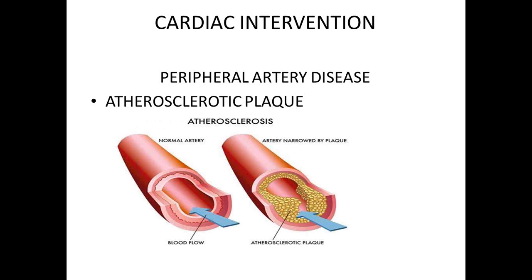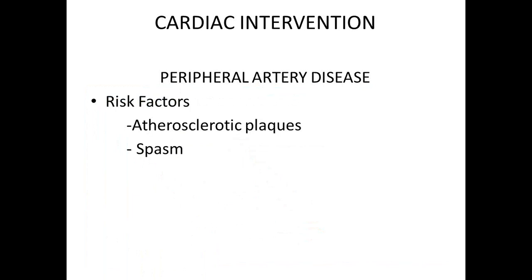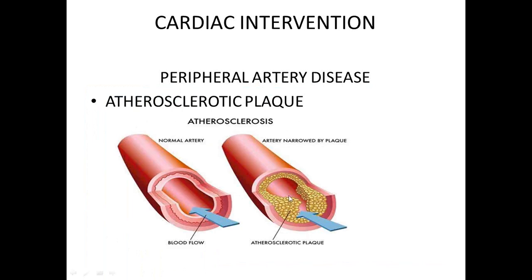What is atherosclerotic plaque? Your normal artery, if you cut it in cross-section, has a smooth lumen. We talk about three walls: the intima, just below the endothelium; the media, which is the muscle layer; and the adventitia, which is the outer layer. When you develop atherosclerotic plaque, the lumen or opening in the blood vessel is compromised and reduced. The buildup on the arterial wall is what we call the atherosclerotic plaque.